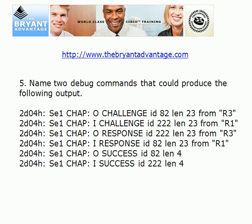You'll see this output in both the debug PPP negotiation and debug PPP authentication commands. What I like to do in a lab or out in the field — if I think there's actually an authentication issue — I'll run debug PPP authentication first, because frankly you get much less output and it's easier to see exactly what's going on. If you run debug PPP negotiation, there's nothing wrong with that, but you get a lot more output. And of course, that is our three-way handshake that we see in action there with CHAP.